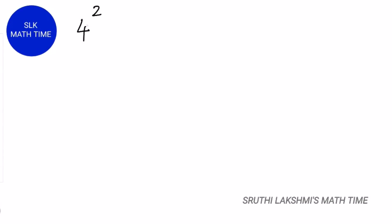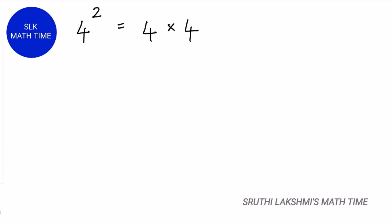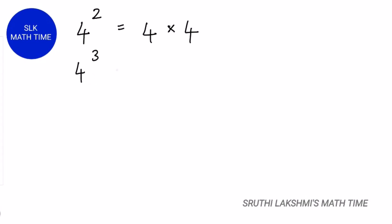Let's look at some practice examples. For 4 power 2, we multiply 4 by itself 2 times, so it's 4 into 4, because the exponent is 2 and the base is 4. For 4 power 3, we multiply 4 by itself 3 times.